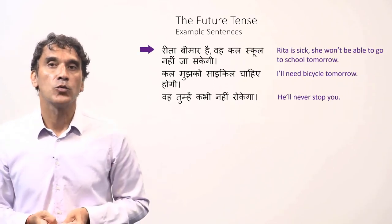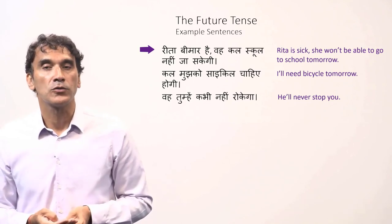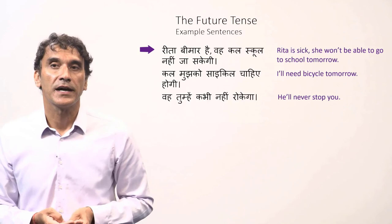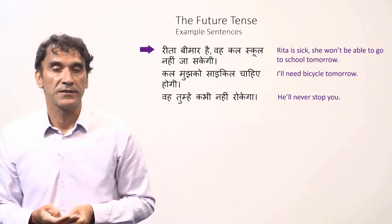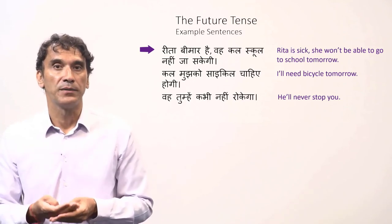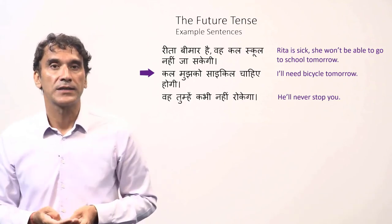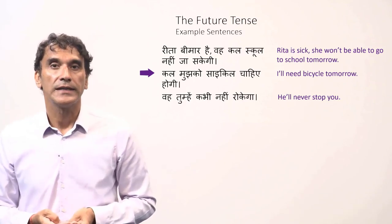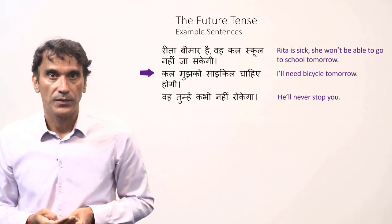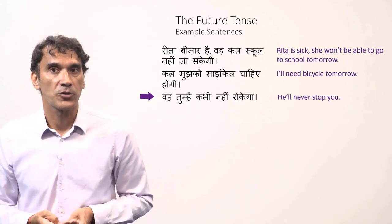'Reeta bimaar hai, wo kal school nahin ja sakegi' — Reeta is sick, she won't be able to go to school tomorrow. Here the modal verb 'sakna' (can / to be able to) is in the future tense: 'nahin sakegi' means 'she will not be able to.' 'Kal mujhko cycle chahiye hogi' means 'I will need a bicycle tomorrow' — this is the sentence with 'chahiye' in the future tense. 'Wo tumhe kabhi nahin rokega' means 'he will never stop you.'